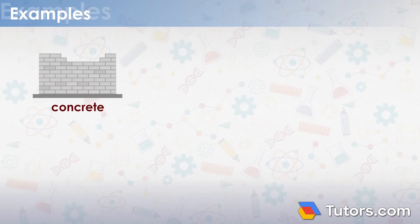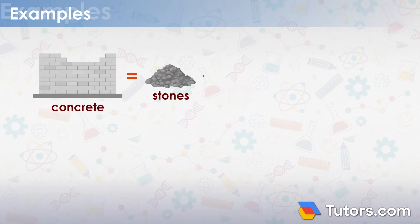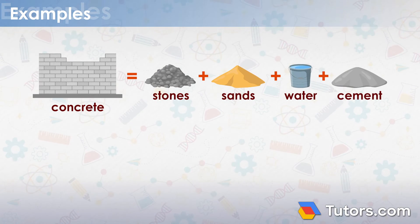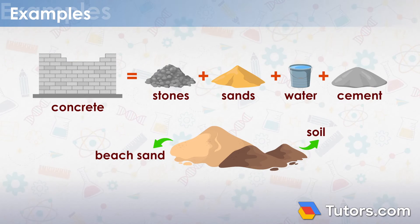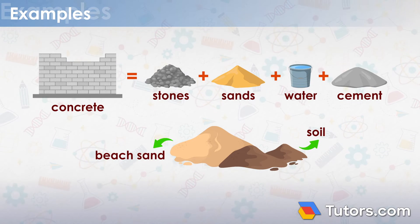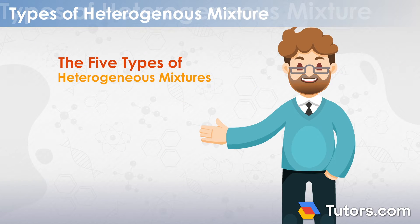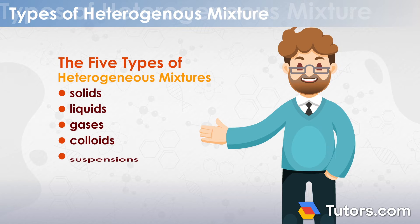Concrete is a heterogeneous mixture of crushed stone, sand, water, and cement. Beach sand and soil are other examples. The five types of heterogeneous mixtures are solids, liquids, gases, colloids, and suspensions.